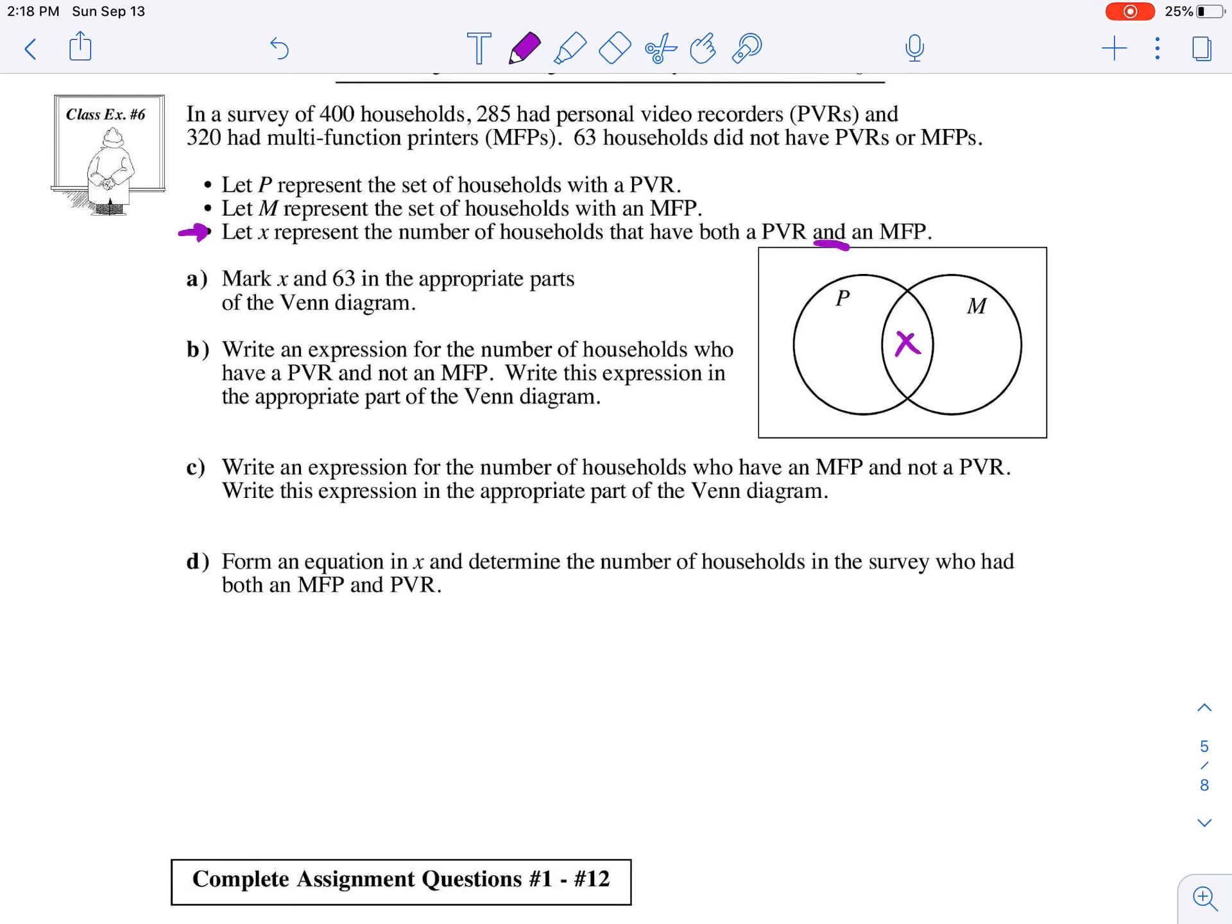So we'll just hold off on that for now. Next, they want us to mark the 63 in the appropriate part. So where does the 63 go? Well, it says 63 households did not have a PVR or an MFP. So that's the number of households that are outside of those two regions or those two circles.